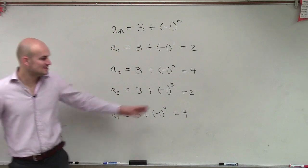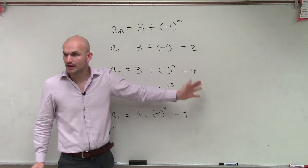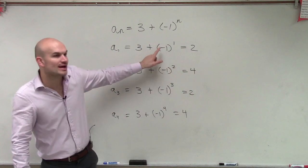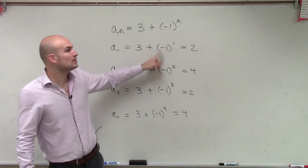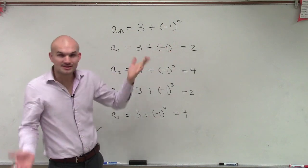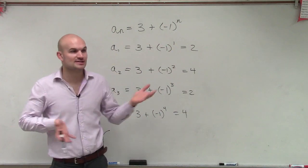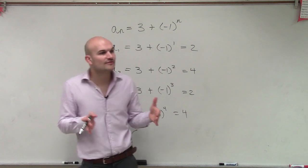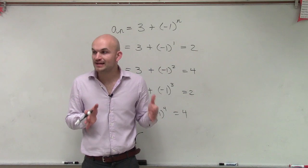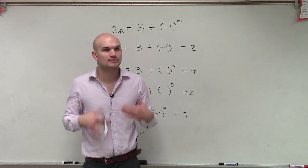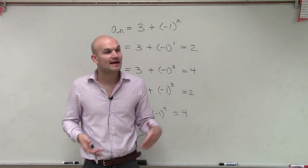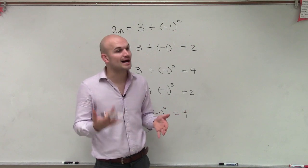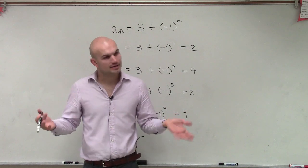So you can see these are alternating, right? And the reason why they're alternating is when we have a negative number raised to a power, it's going to alternate the sign depending if you raise it to an even or an odd. Because a negative number raised to an even power is always positive, and a negative number raised to an odd power is always negative.